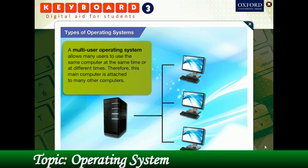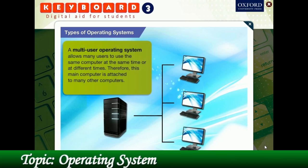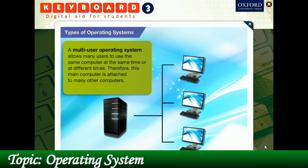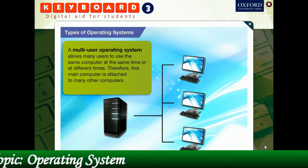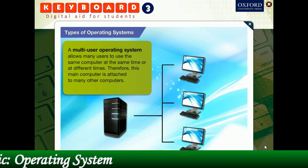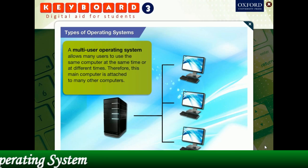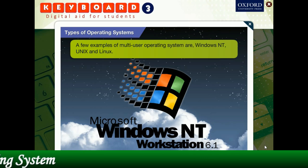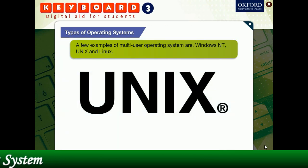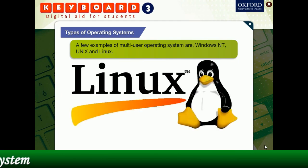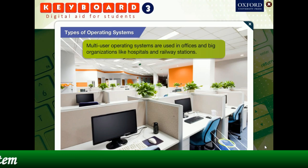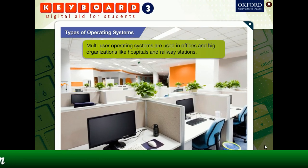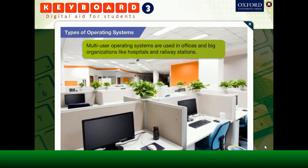A multi-user operating system allows many users to use the same computer at the same time or at different times. Therefore, this main computer is attached to many other computers. A few examples of multi-user operating systems are Windows NT, Unix, and Linux. Multi-user operating systems are used in offices and big organizations like hospitals and railway stations.